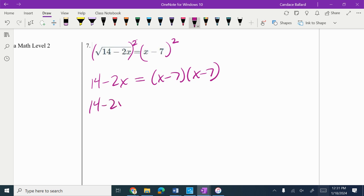On the right side, I'm going to FOIL that. That's our next algebra step. x times x would be x squared. x times negative 7 is negative 7x. Then negative 7 times x is another negative 7x. When we combine those like terms, negative 7x and negative 7x is negative 14x.